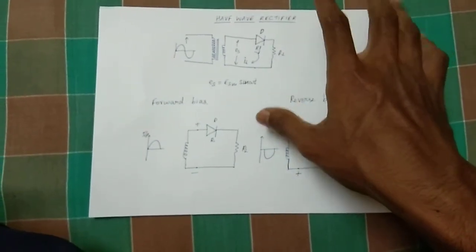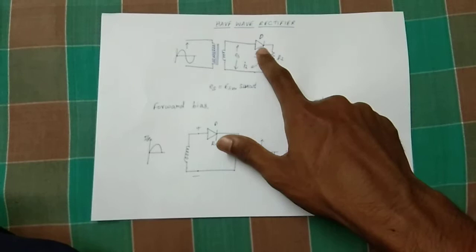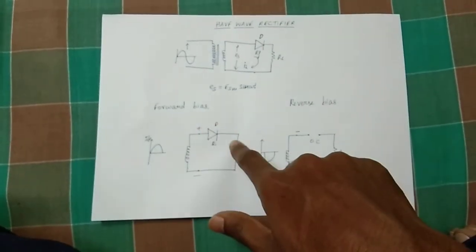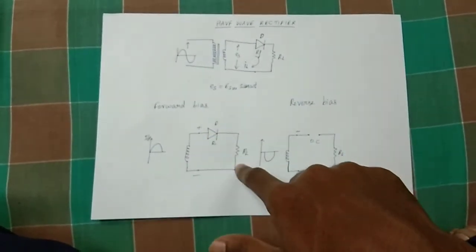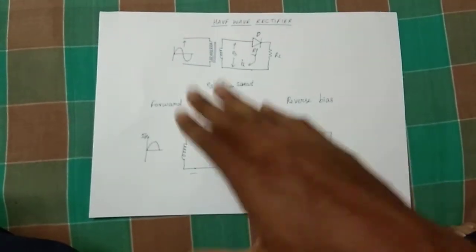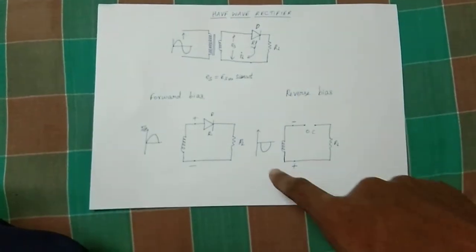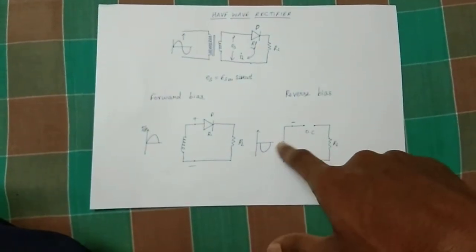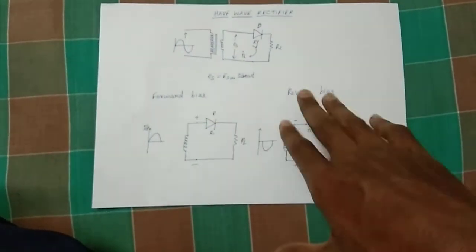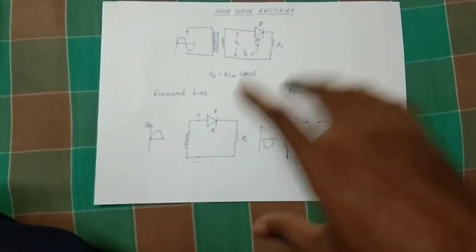This is the voltage and DC voltage. If you have a positive supply and negative supply, this is the voltage output. This is the negative supply. This is the positive cycle. This is the negative cycle. This is the reverse bias. This is the DC output.